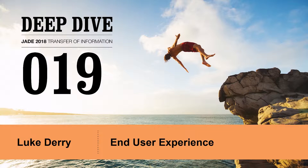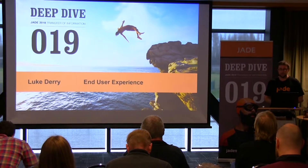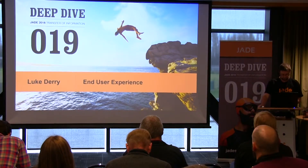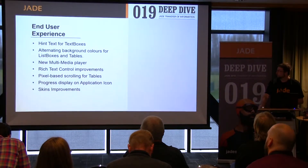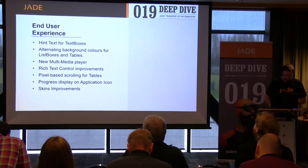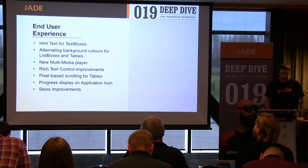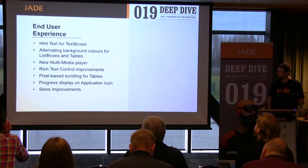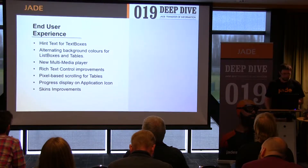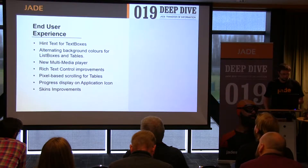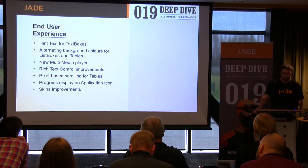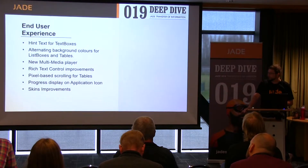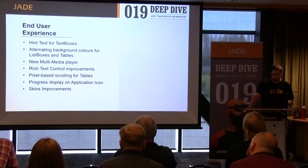Welcome back, I'm Luke, and I'll be going over some end user experience features that are new in J 2018. We've got hint text for text boxes, alternating background colors for list boxes and tables, a new version of the multimedia player, some improvements for the rich text control, pixel based scrolling for tables, progress display on the application icon, and some skin improvements.